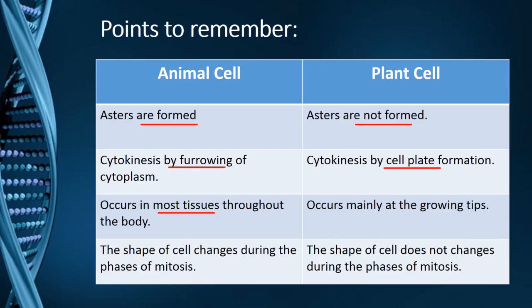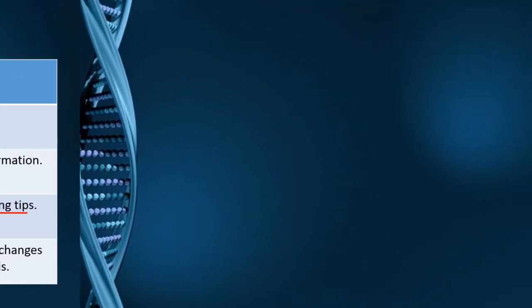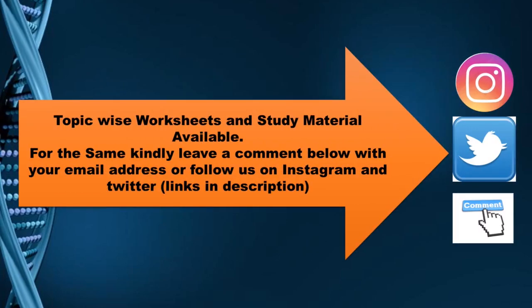In an animal cell, mitosis occurs in most tissues throughout the body, whereas in a plant cell it occurs mainly at the growing tips. In an animal cell the shape of the cell changes during the phases of mitosis, whereas in a plant cell the shape does not change during the phases of mitosis. Topic-wise worksheets are available — kindly leave a comment in the comment section if you wish to avail the same.